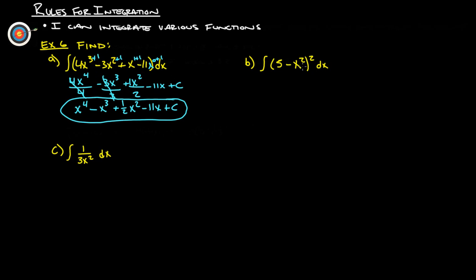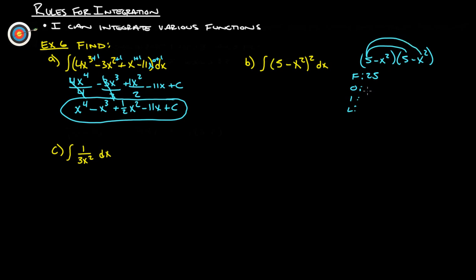For part b, we have two terms here squared. We don't have any rules to simplify this yet, so we're going to have to multiply these out: 5 minus x squared, times another 5 minus x squared. You can FOIL it out — or do the hawk, or the box, whatever you use to multiply your binomials. 5 times 5 is 25; outside is 5 times negative x squared, which is negative 5x squared; inside is negative x squared times 5, which is another negative 5x squared; and last is negative x squared times negative x squared, which is positive x to the fourth.